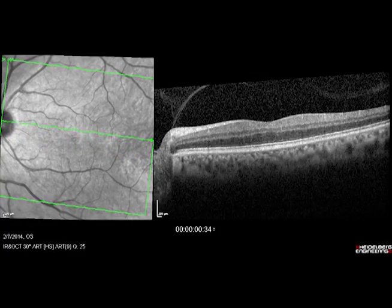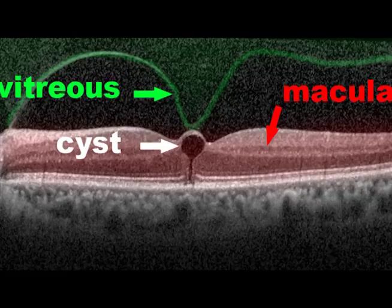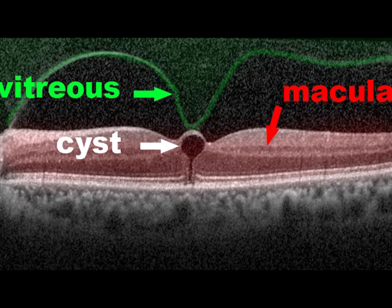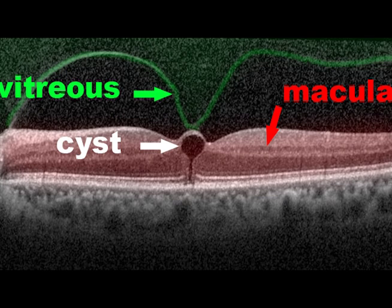This video shows fibers that are pulling on the center of the macula. We call this vitreomacular traction. This patient was treated in the office with a Jetrea injection and did well.